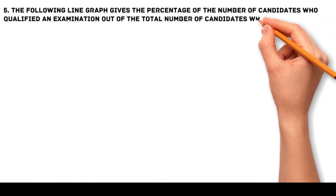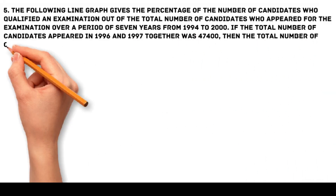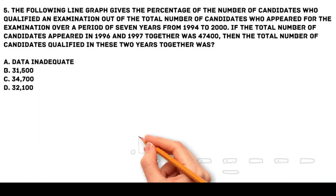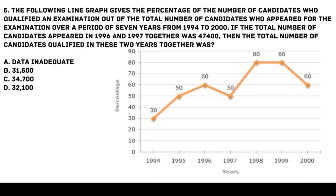Problem 5: The following line graph gives the percentage of the number of candidates who qualified in an examination out of the total number of candidates who appeared over a period of seven years from 1994 to 2000. If the total number of candidates who appeared in 1996 and 1997 together was 47,400, then what is the total number of candidates who qualified in these two years together?